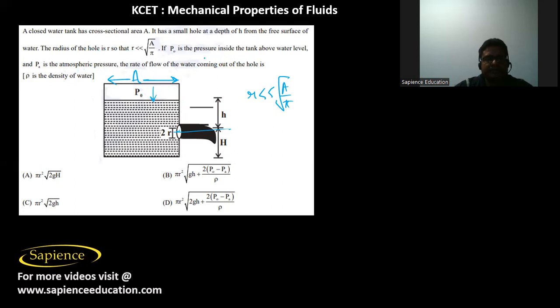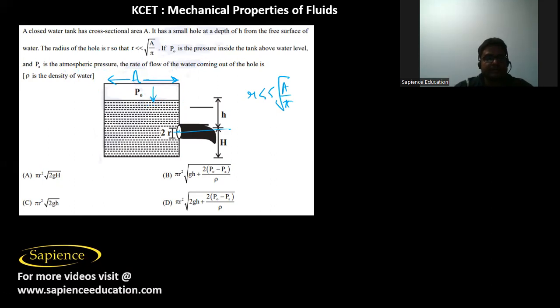We apply the equation of continuity. Let v₁ be the speed at the surface and v₂ be the speed at the hole. Then A·v₁ = πr²·v₂, so v₂ is what we need to find.